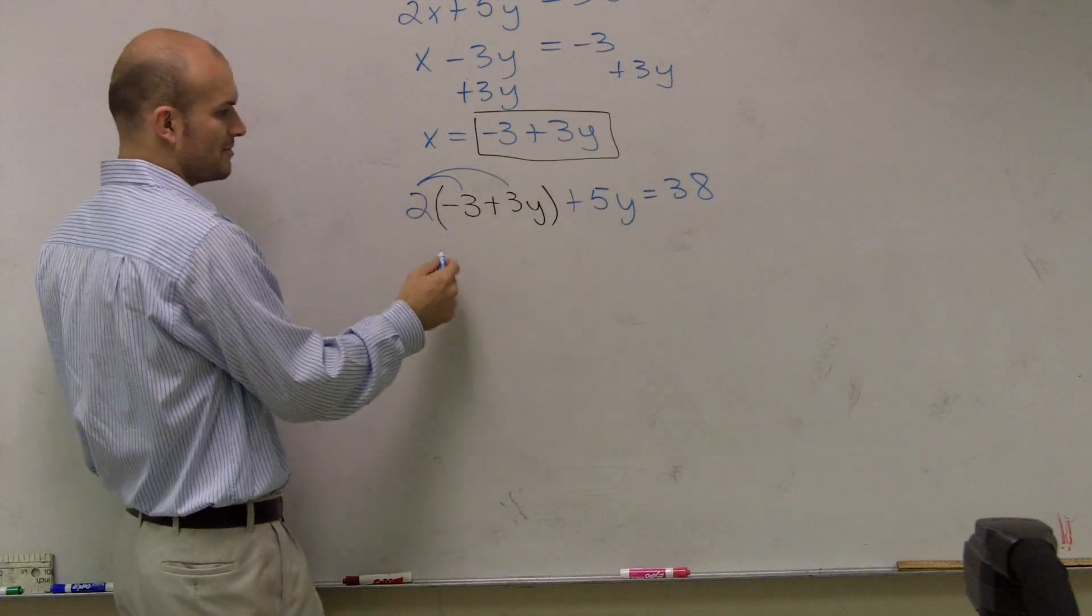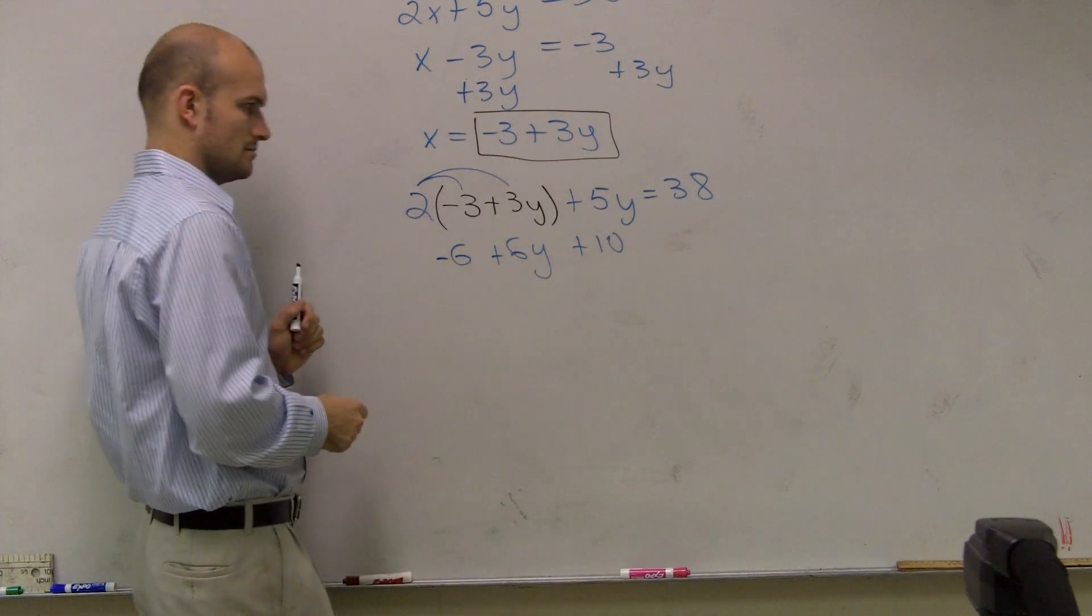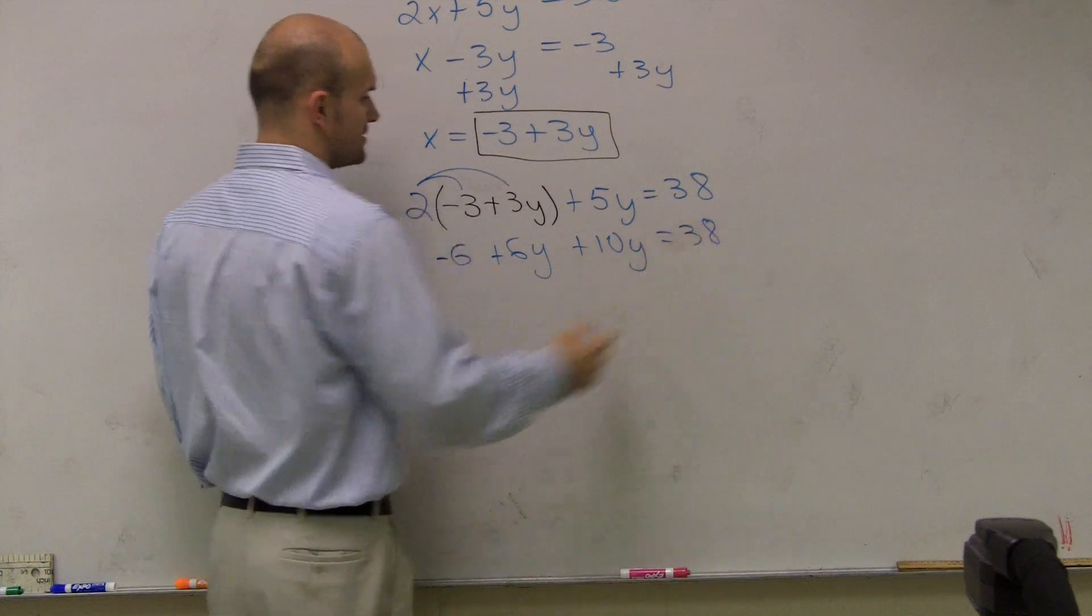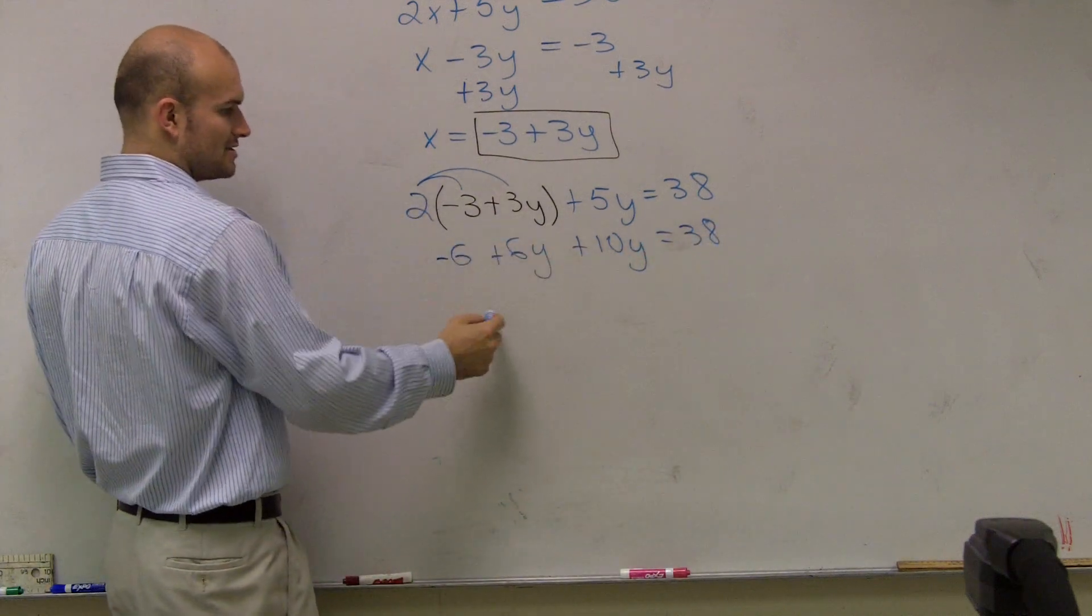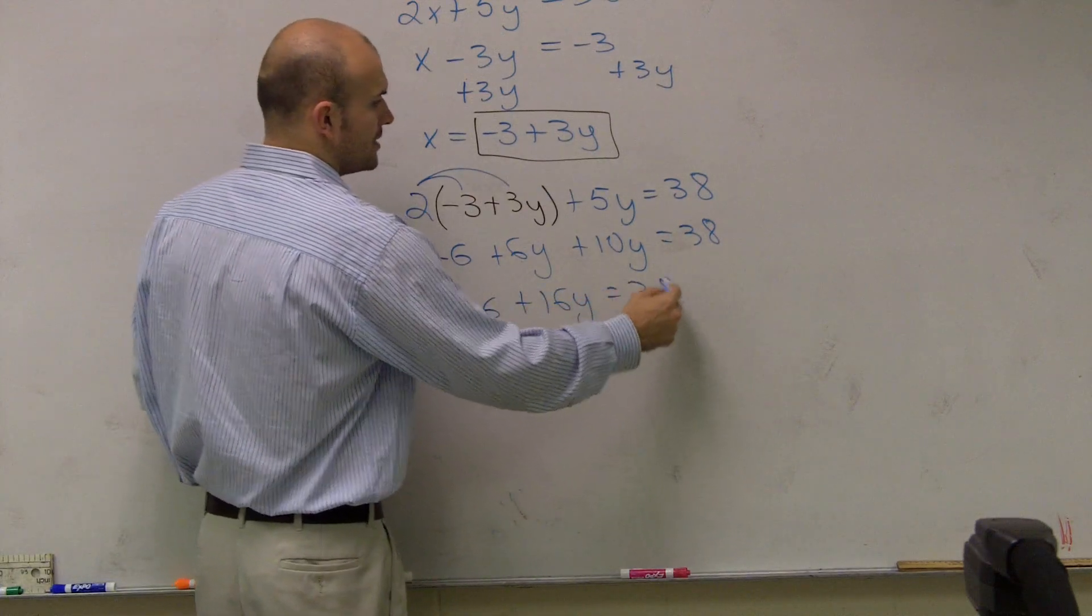Therefore, then I distribute, I have negative 6 plus 6y, plus 5y equals 38. Combine my like terms. I have negative 6 plus 11y equals 38.